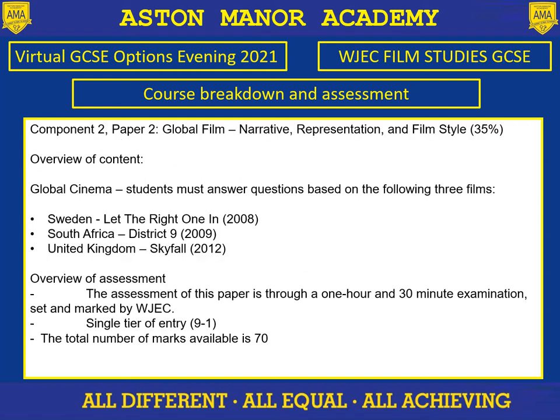Paper two is where the real diversity comes into the GCSE, where we look at films from different cultures and different parts of the world. In year 10 we will look at Let the Right One In, District 9, and Skyfall — so Sweden, South Africa, and the United Kingdom. We take a different kind of look at each of these films, a different kind of hat on as we watch them.